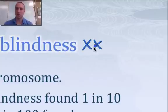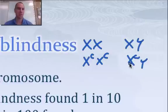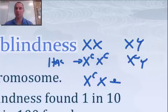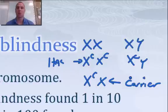A normal female is XX and a normal male is XY. For a female to have colorblindness, she has to receive the colorblind allele from both her mom and her dad. A male only gets a Y from his father, so he can only get colorblindness from his mom — and if he does, he has it. A female can also be a carrier: she has colorblindness on one X but not the other, so she can pass it to her sons or daughters without showing colorblindness herself. Sex-linked traits show up more in males than females — one in ten males versus one in one hundred females — because males only have one X.